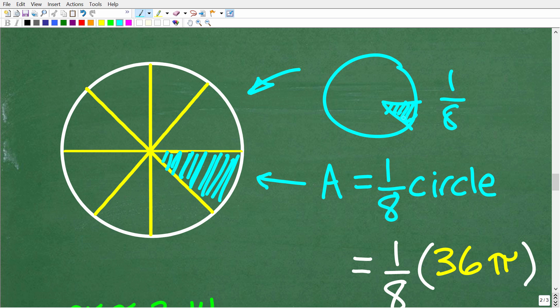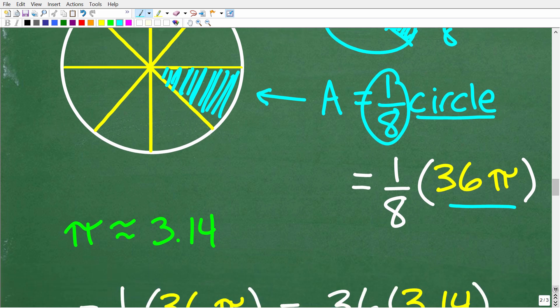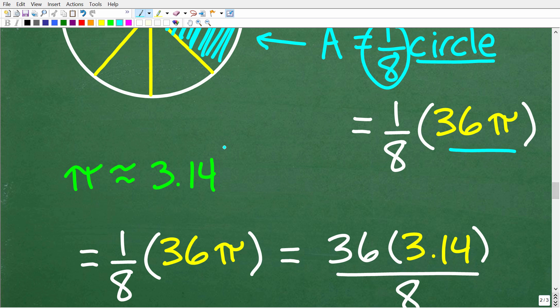So we already did the work to find the area of the circle, that's 36 pi. But now we need to find the area of one of these slices. So we're going to take one eighth and multiply it by the area of the circle. So that's going to be one eighth times 36 pi. So now we'll go ahead and use our calculator just to get a nice decimal approximation here.